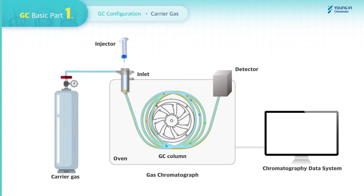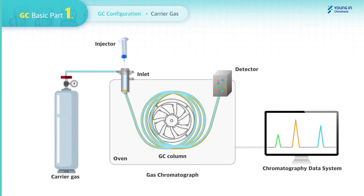Then the sample is separated into individual components through various chemical interactions with the stationary phase in the column. The detector converts the concentration of each component into electrical signals. Finally, the signals are shown as a chromatogram by the chromatography data system.